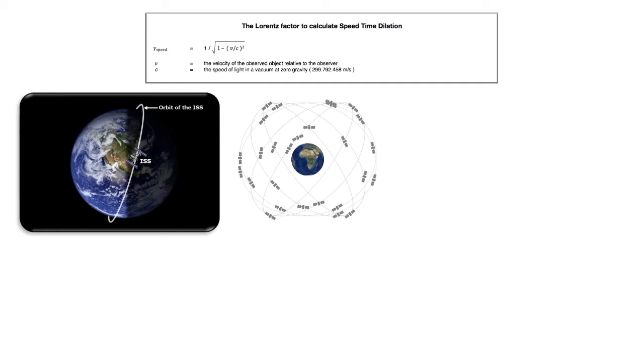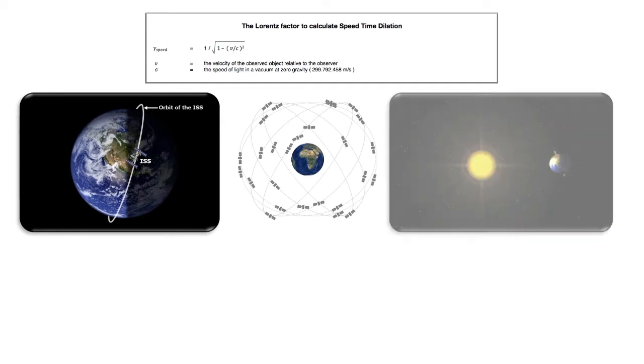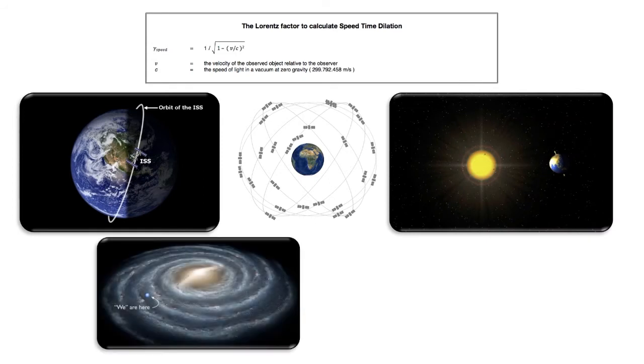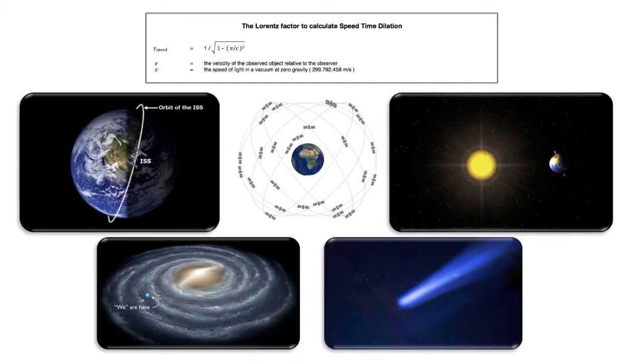I'll start giving an example of the speed time dilation of the ISS, the International Space Station. Then the speed time dilation for GPS satellites orbiting at a much higher orbit. The Earth orbiting around the Sun. And for the solar system orbiting in the Milky Way. And the speed time dilation if you go close to the speed of light.